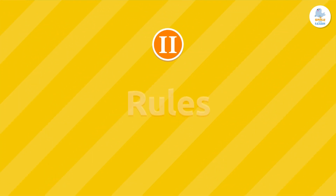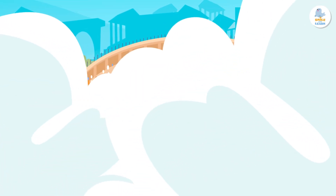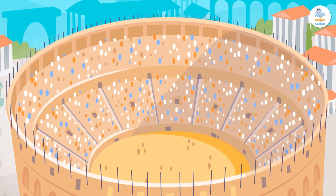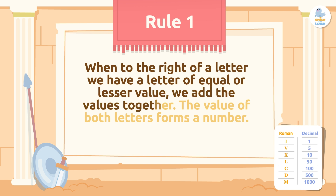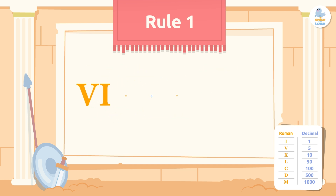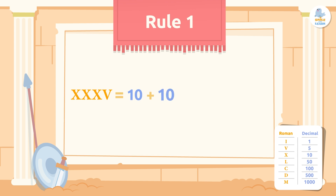Now let's look at the different rules for writing Roman numerals correctly. Rule 1: when the letter to the right has an equal or lesser value, we add the values together. For example, VI represents 5 plus 1, which equals 6. Another example: XXXV equals 10 plus 10 plus 10 plus 5, which equals 35.